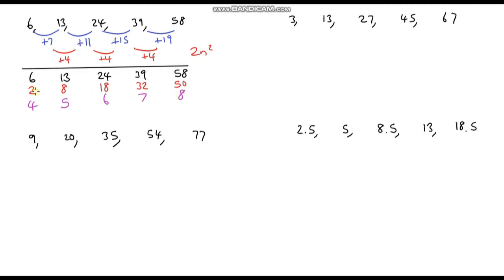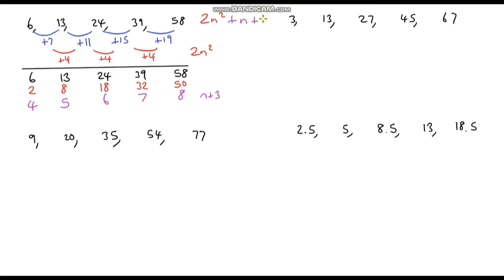We've got a nice arithmetic sequence — it goes up by 1 each time. So it's our 1 times table, shifted up by 3. The nth term of this sequence is just n plus 3. So to work out the nth term of our original sequence we add the two sequences together: the quadratic part 2n squared, plus the arithmetic part n plus 3. And this is our nth term.